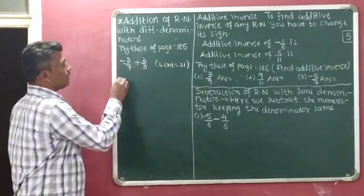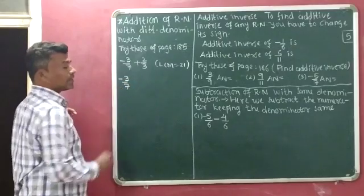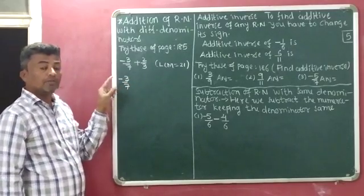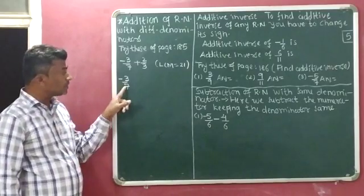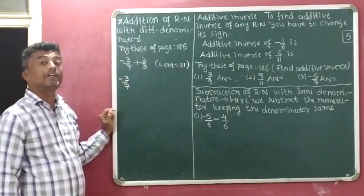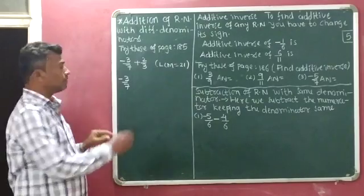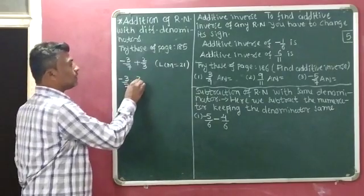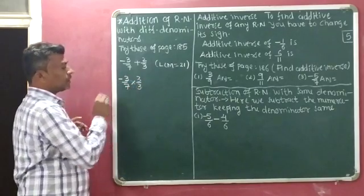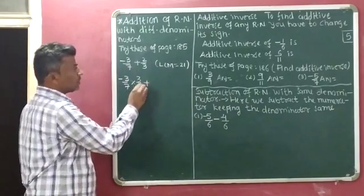Now for the first fraction, minus 3 by 7: the denominator is 7. We need to multiply 7 by 3 to get our LCM of 21. So we multiply both the numerator and denominator by 3.